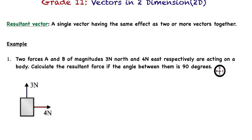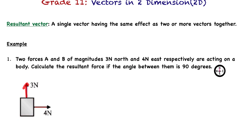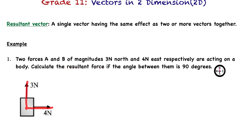Now let's look at this example: calculating the resultant and drawing the vector diagrams. Two forces A and B of magnitude 3 Newtons North and 4 Newtons East respectively are acting on a body. If you look at these forces, they're acting at a right angle — perpendicular to each other. So these forces are in two dimensions: one vertical and one horizontal.